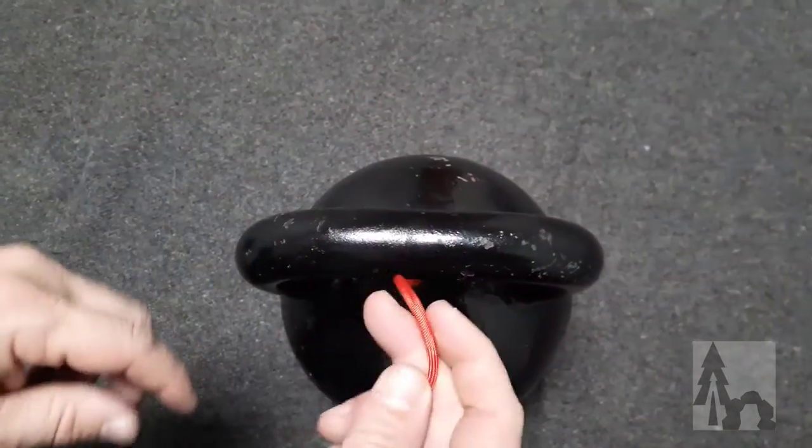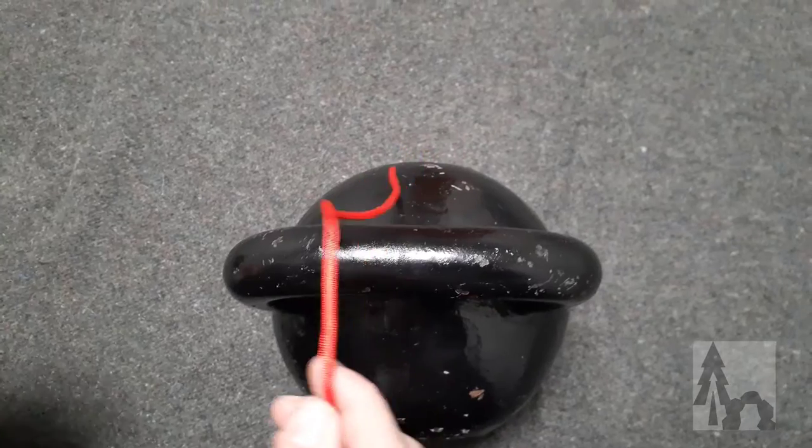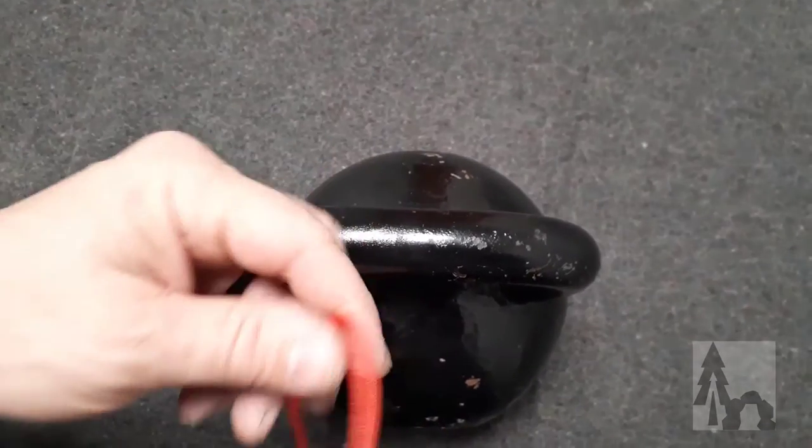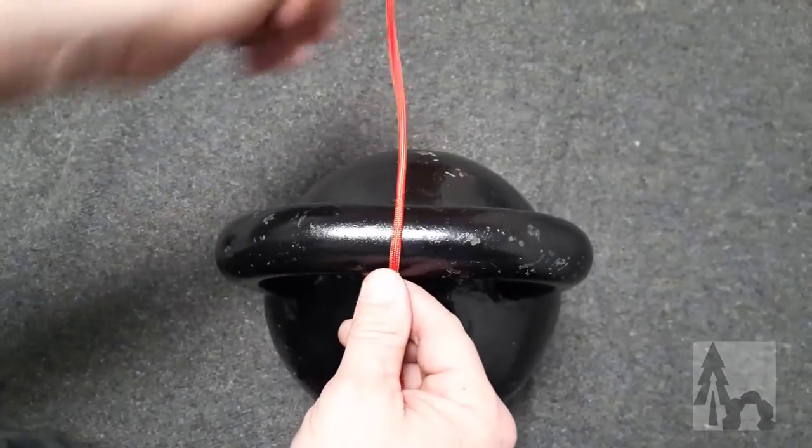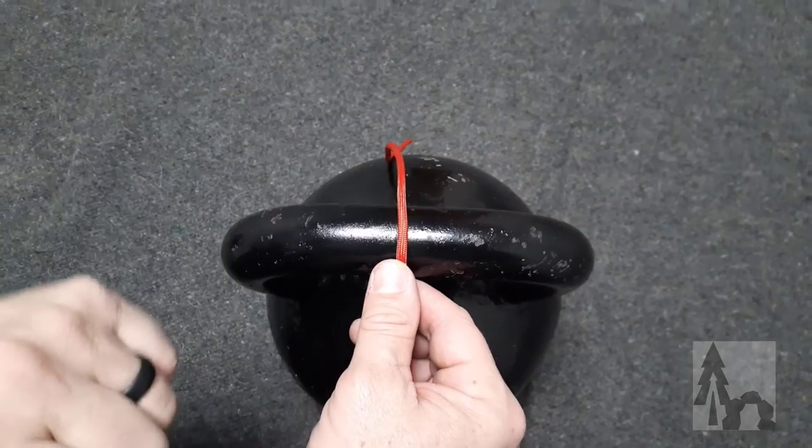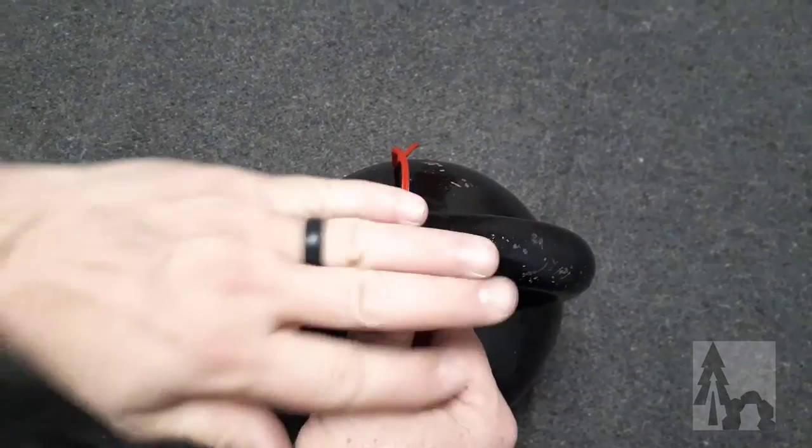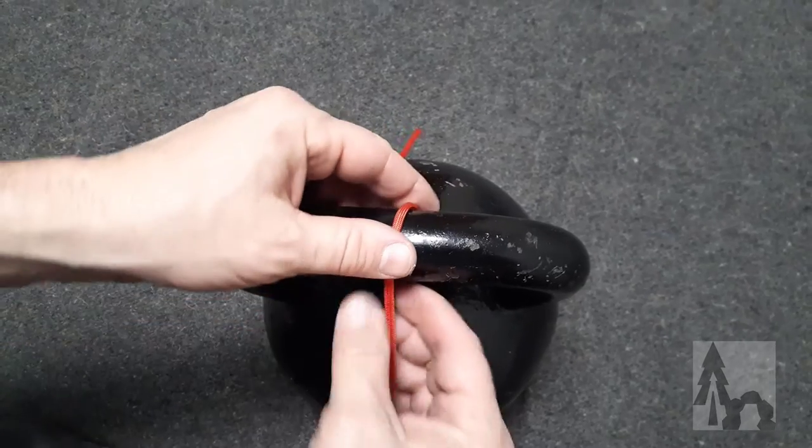All right, so this is a real simple hitch called the clove hitch that we're going to use over and over. You can take your working end and throw it across the bar or the tree branch or whatever you're attaching to. We'll do it horizontally, then we'll show you a vertical one.